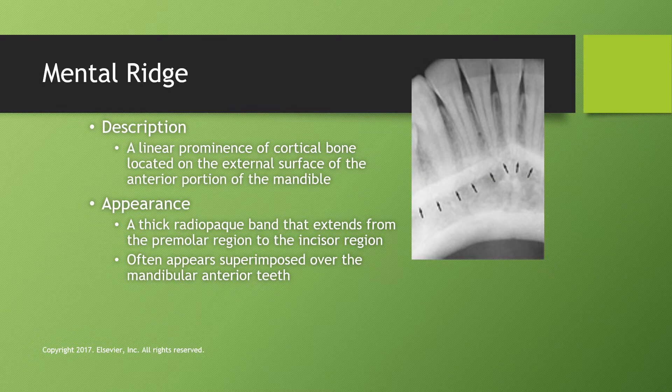The mental ridge is a linear prominence of cortical bone on the external surface of the anterior mandible — basically the part of your chin that sticks out. It appears as a thick radiopaque band extending from the premolar region to the incisor region, often superimposed over the mandibular anterior teeth. The mental ridge extends from the premolar region to the midline and slopes slightly upward, following the shape of the chin.